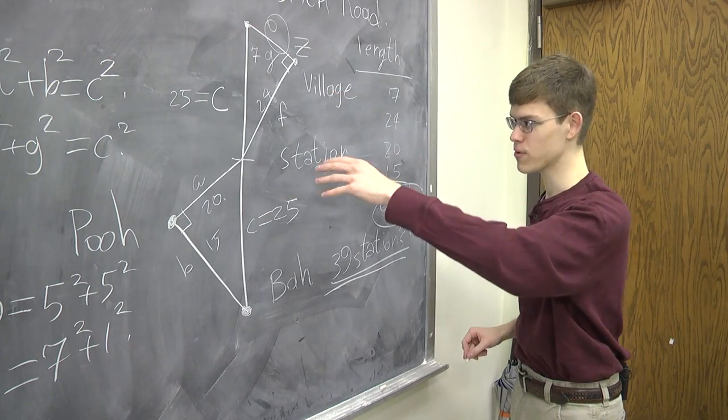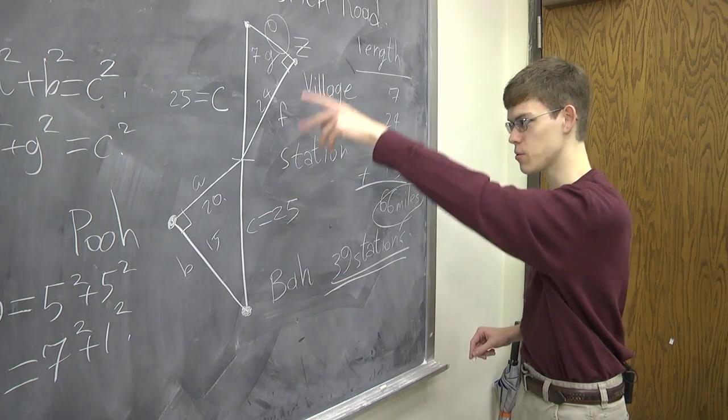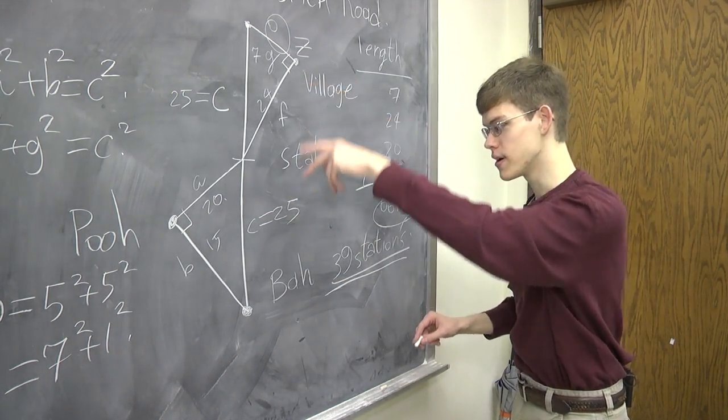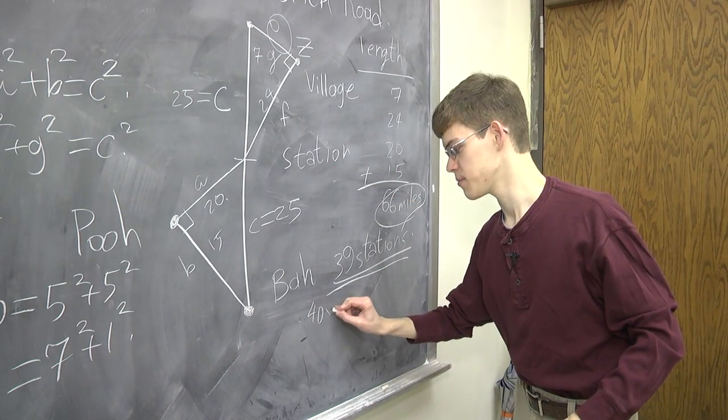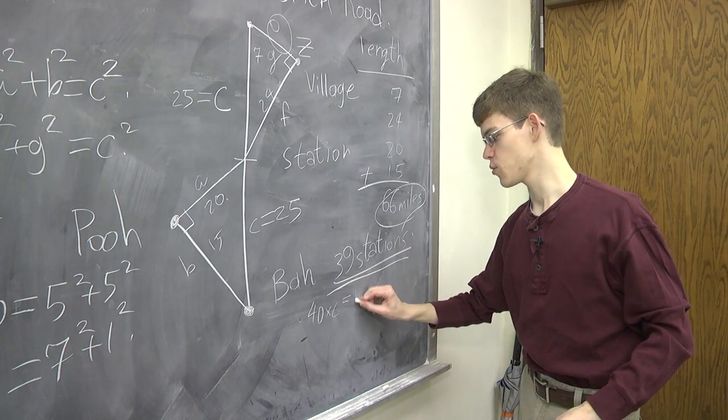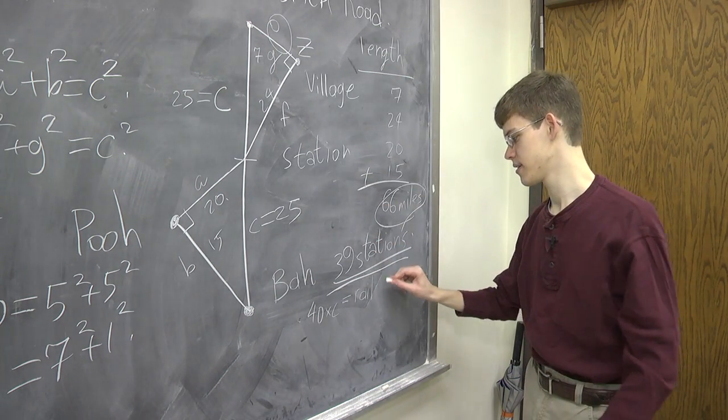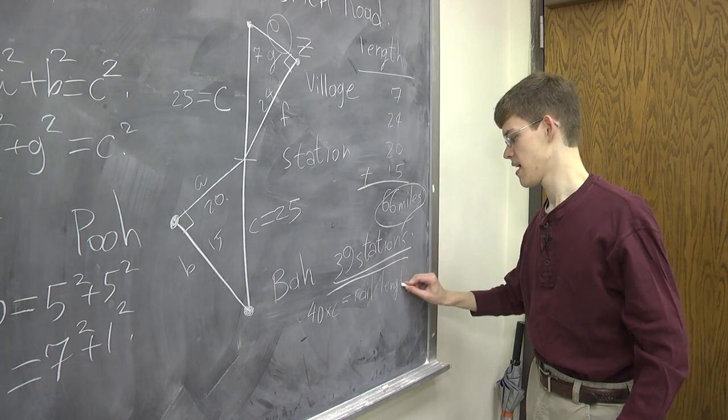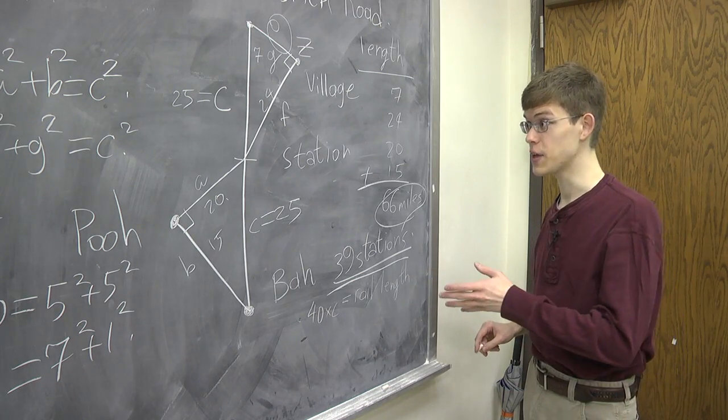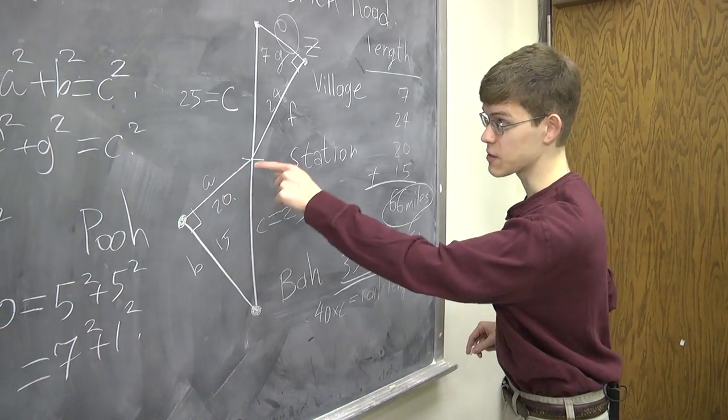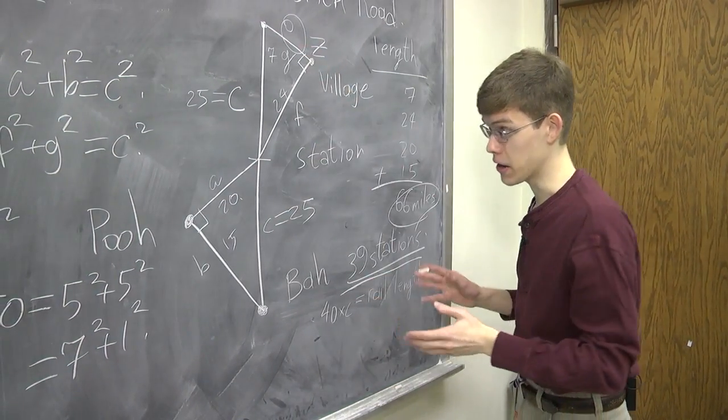Different lengths. Whole numbers. Equal. So this forty times C is equal to the rail length, the length of the railroad, the straight line. And the length of the yellow brick road is going to be a sum of eighty different mile stretches.